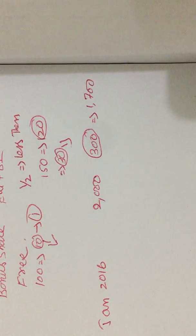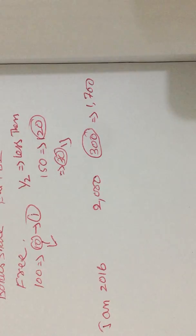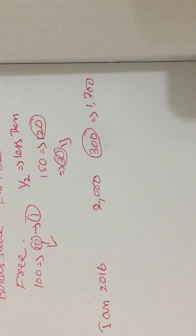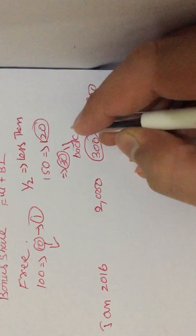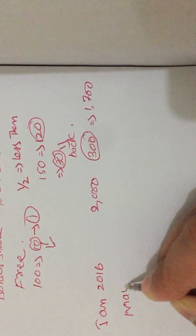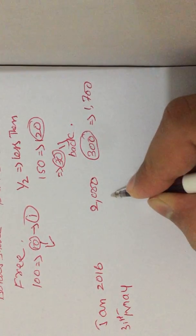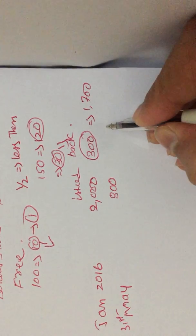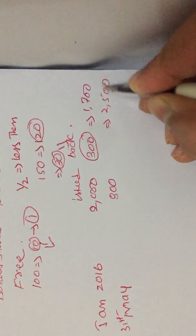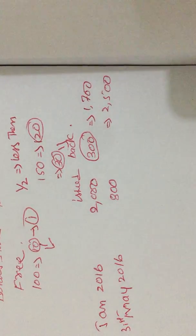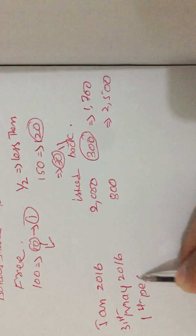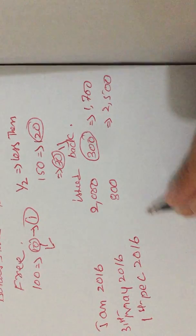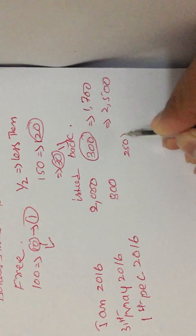Sometimes prices shoot up due to market demand and supply, so companies buy back shares. Then on 21st May 2016, 800 new shares were issued, bringing the total to 2,500. Then on 1st December 2016, the company purchased back 250 shares again, leaving a balance of 2,250.